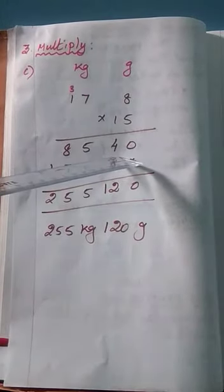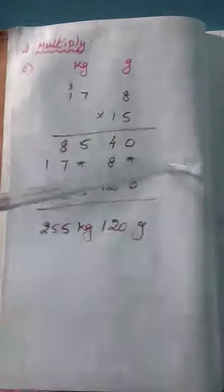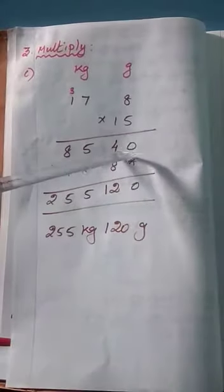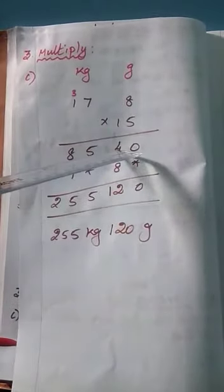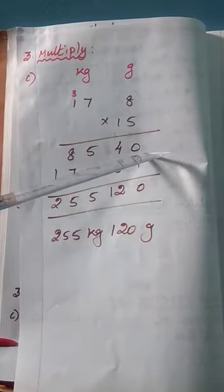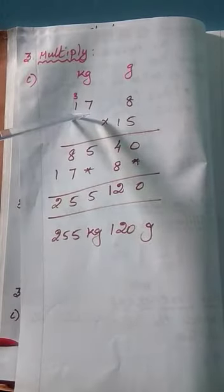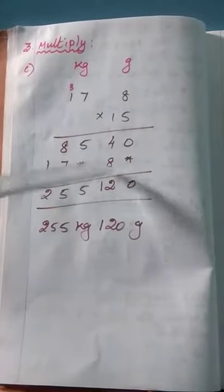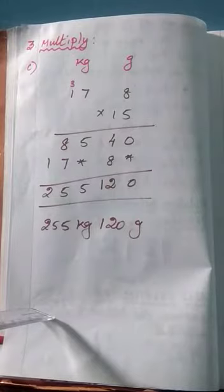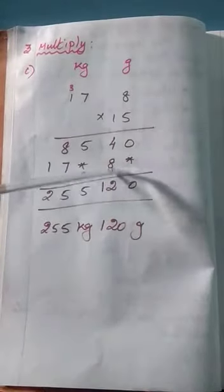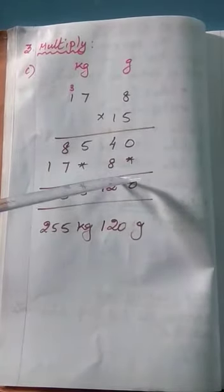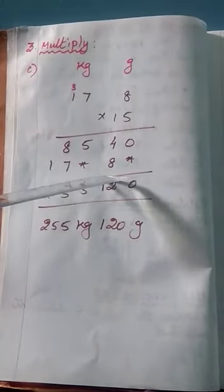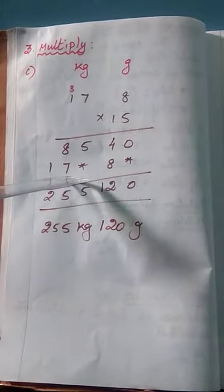You have to write up to 900 in the gram column only. The answer is only 40, so write 40 below the gram column. Next, you have to multiply by kg. 7 times 5 is 35. Write 5 down and 3 is the carry. Then multiply 5 into 1: 1 times 5 is 5. 5 plus 3 is 8. Next, multiply by 1: 1 times 8 is 8. If you multiply the second number, leave the first digit and write from the second digit. For kilogram also, you have to write in the same method — leave the first digit and write from the second column. 1 times 7 is 7, and 1 times 1 is 1.